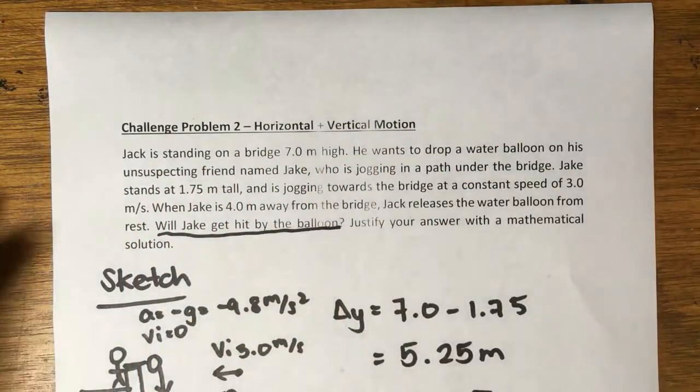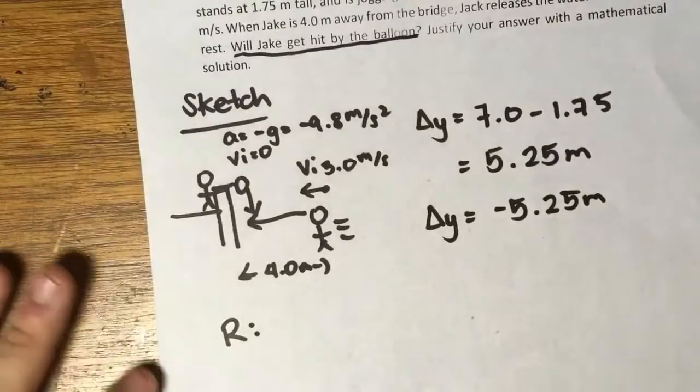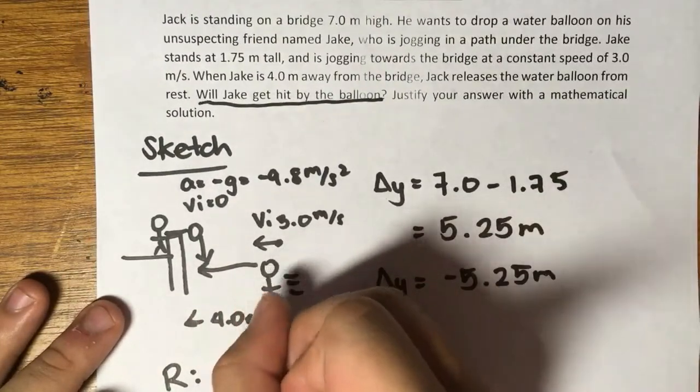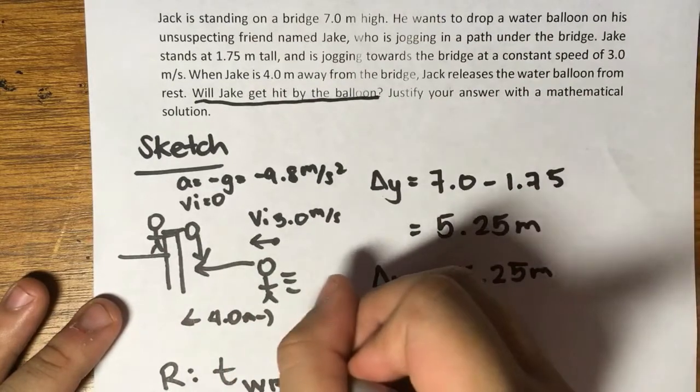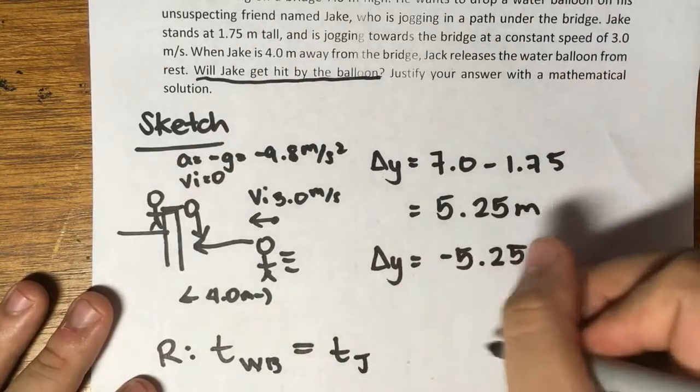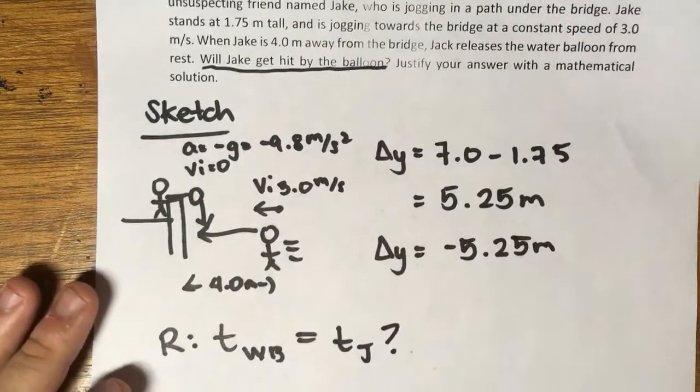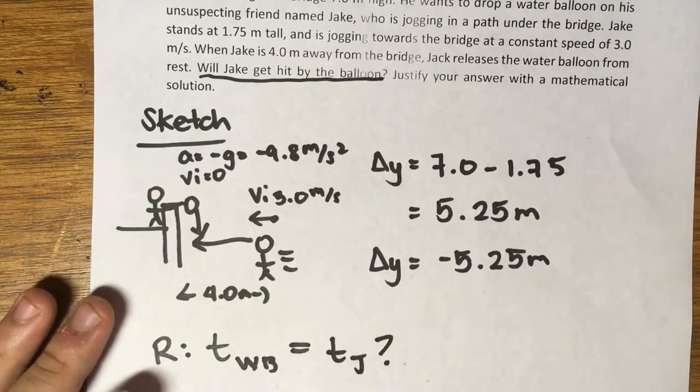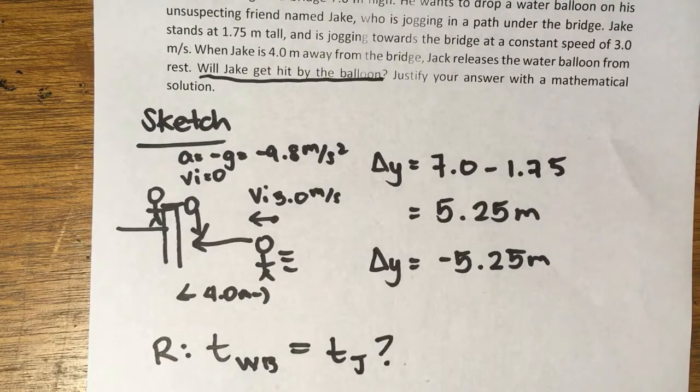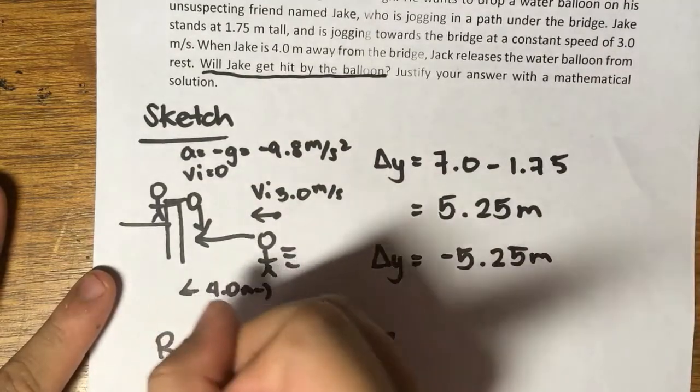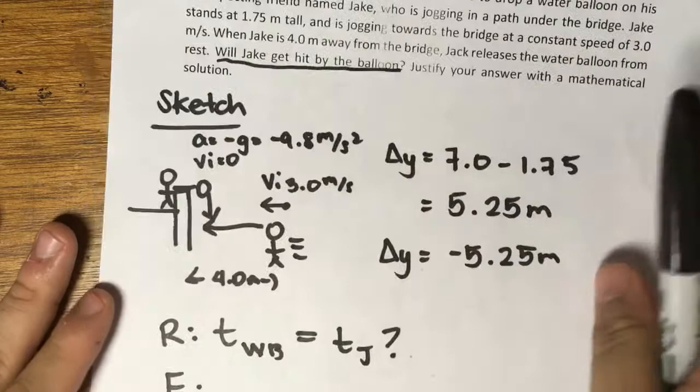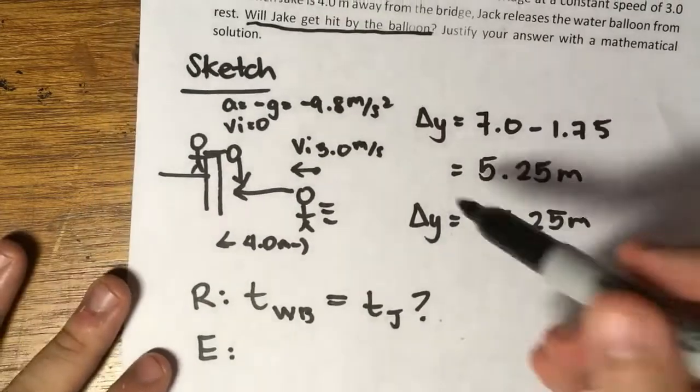What are we being asked to look for? Will Jake get hit by the balloon? That's the question we have to answer. Well, one way we can determine this is if their time coincides. So if the time of the water balloon is equal to the time of Jake, then we can say that it's a direct hit. If it's not equal, then we can say that Jake was able to avoid the water balloon.